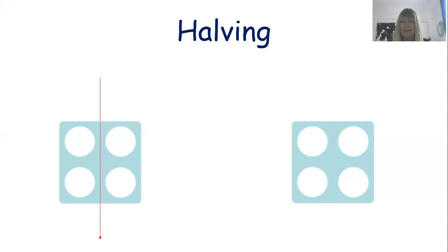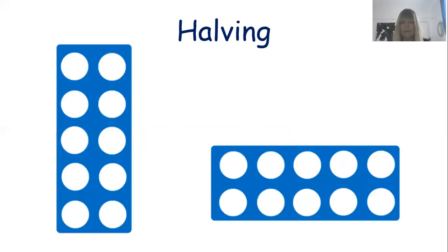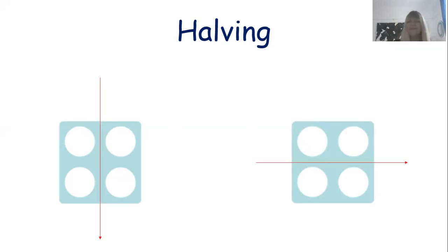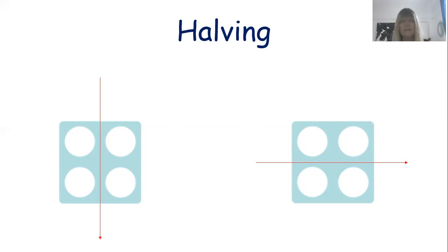Let's halve this in the other direction — a horizontal divide. Four has been divided so we've got two at the top and two circles at the bottom. We're going to say that is a half because two and two make four. Half of four is two.